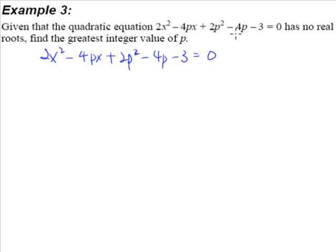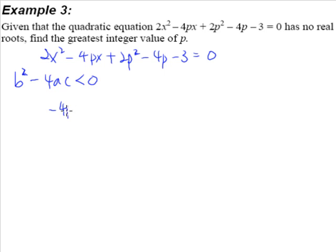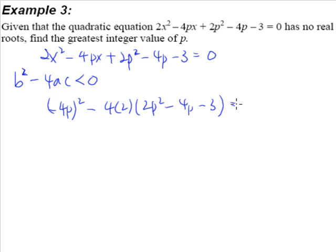What we know is that this quadratic equation has got no real roots. What it means, or rather what it's trying to tell us, is that our b squared minus 4ac is less than 0 — it's a negative number. So this is precisely what we're going to do: b squared minus 4ac, we have negative 4p squared, which is our b squared, minus 4ac, and this is less than 0.